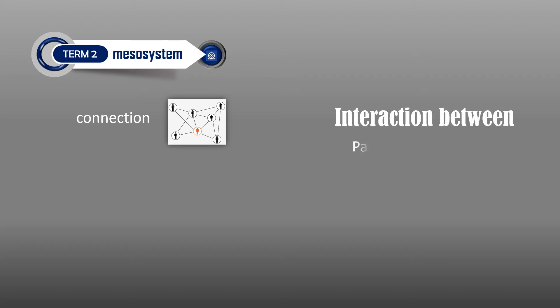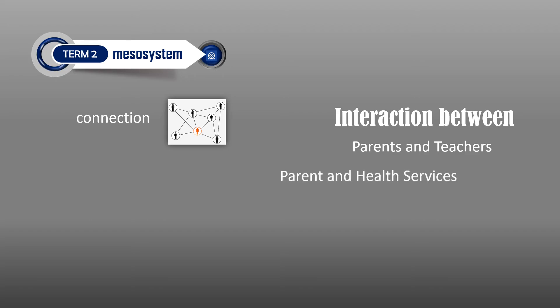The Mesosystem. This layer serves as the connection between the structures of the child's microsystem. For example, the Mesosystem will include the link or interaction between the parents and teachers, or the parent and health services, or the community and the church.